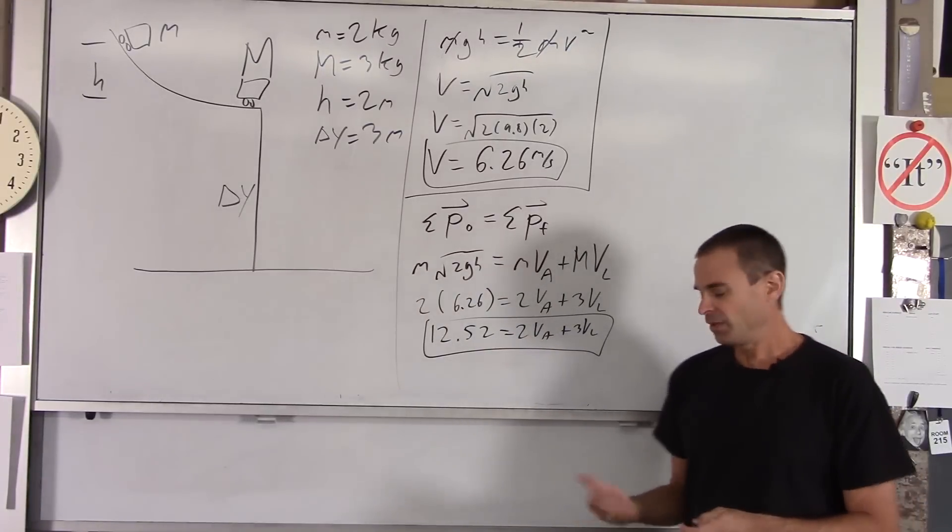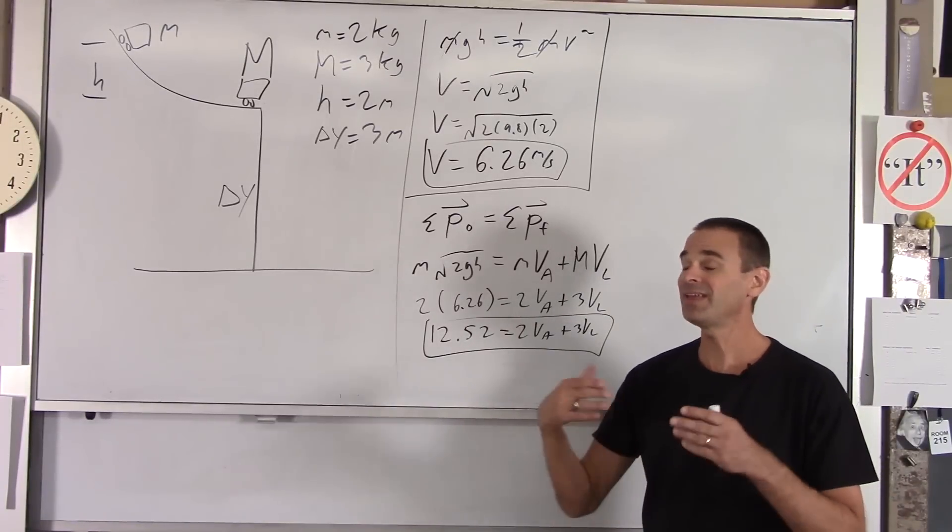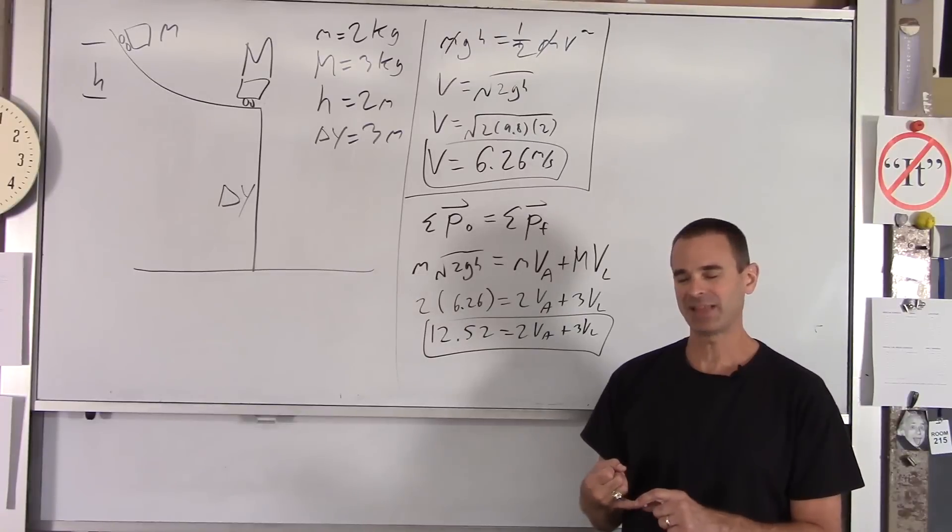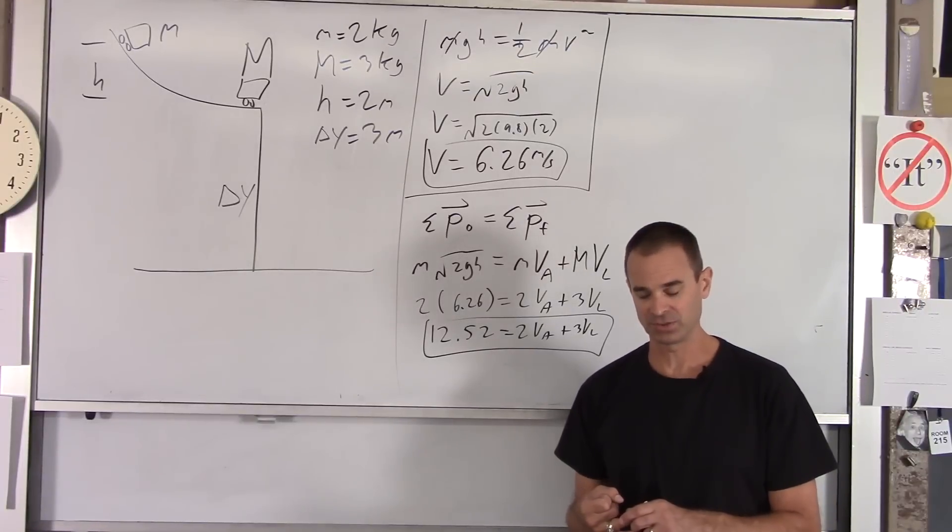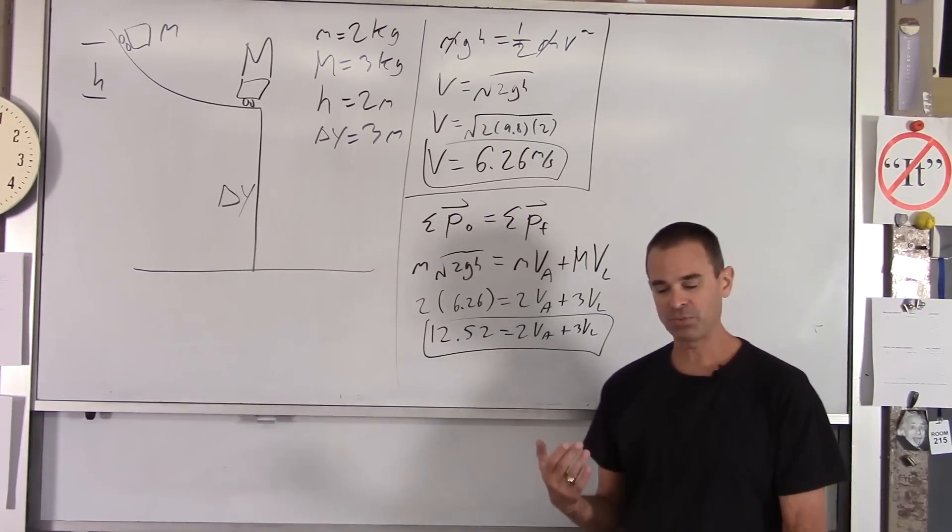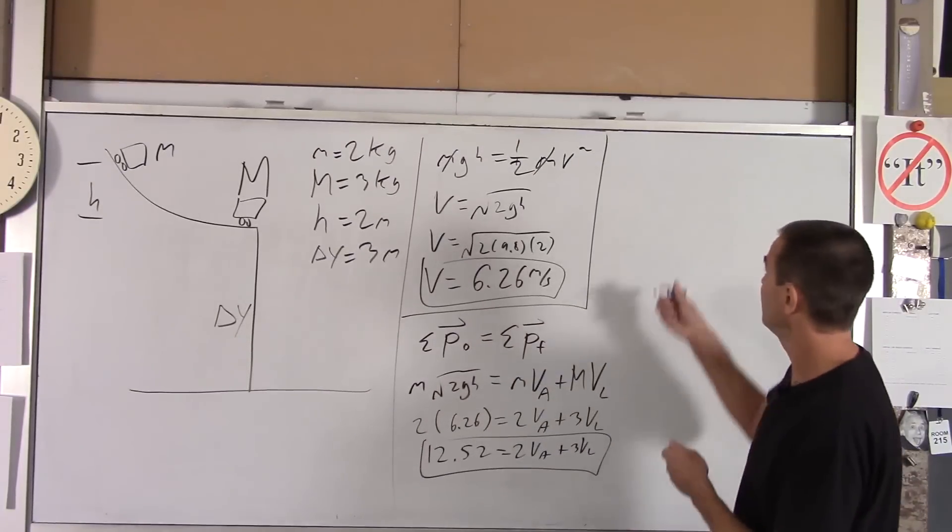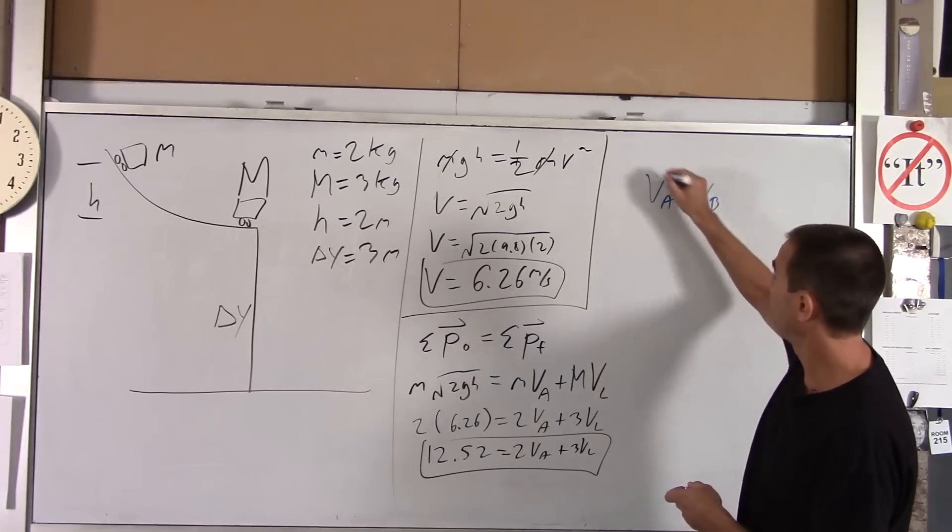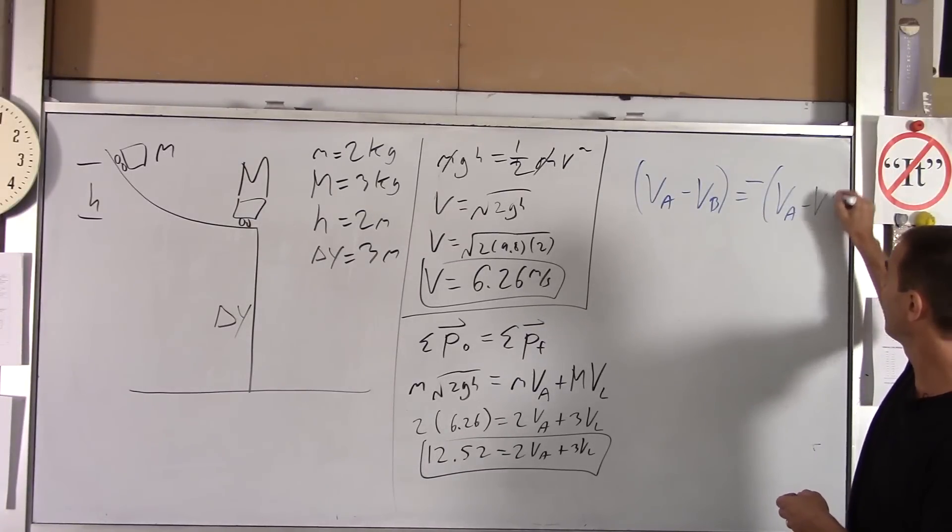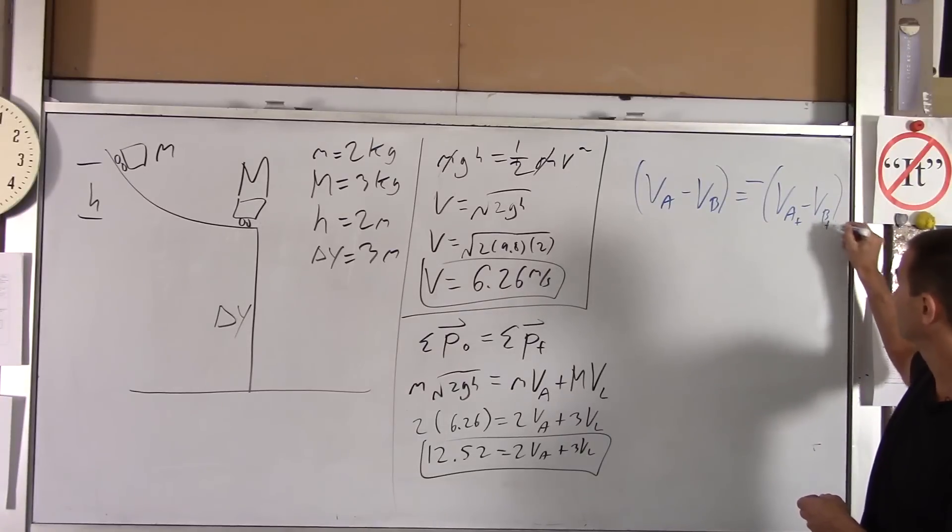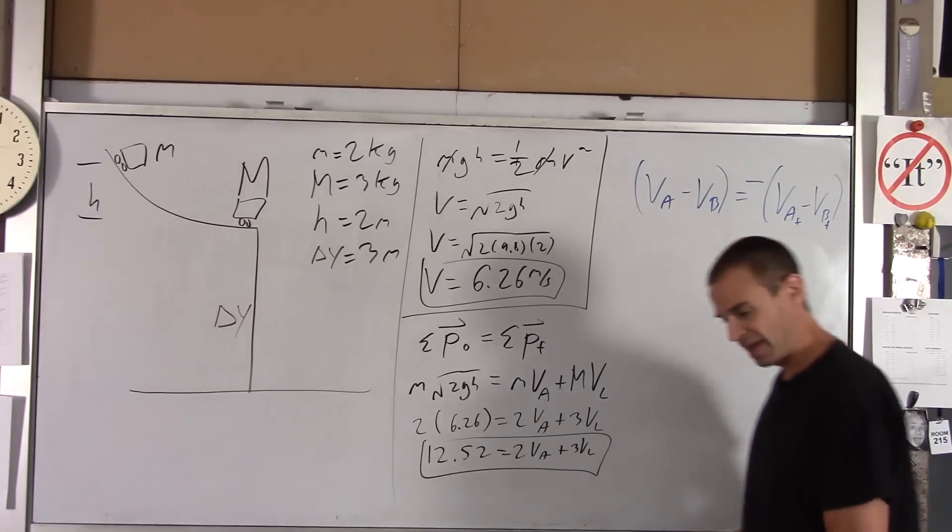Problem is, we got two unknowns. Now, in class, we derived what we call a shortcut formula for using only elastic collisions. So for an elastic collision, we know not only is momentum conserved, but we also know that they're special because kinetic energy is conserved. So if you do some math with kinetic energy and with momentum, you get the following shortcut formula. I'll write that over here. You get vA minus vB before the collision equals the negative of vA minus vB after the collision. So the impact velocity is opposite to rebound velocity, basically.